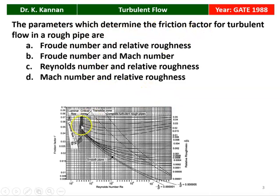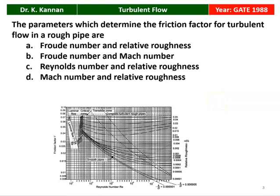The friction factor is determined by the Moody chart. On this chart, the x-axis is Reynolds number, the y-axis is friction factor, and the lines represent relative roughness. The Moody chart is used to find the friction factor for turbulent flow. The parameters are Reynolds number and the relative roughness of the pipe.